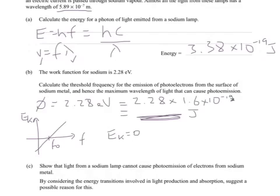So what you need is if the kinetic energy is zero, that's going to be the energy of the frequency of light minus the energy required to release it from the metal. We're after the threshold frequency for the emission of photoelectrons from the surface of sodium metal. And then from that we can work out the maximum wavelength of light that can cause photoemission from V equals F lambda.